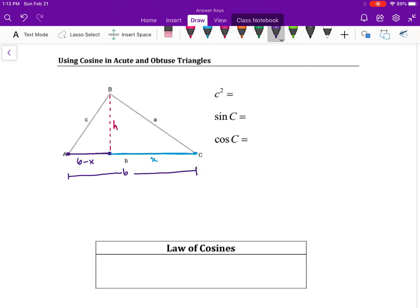We're going to start off and use the Pythagorean theorem to represent side length C, which is the hypotenuse of that left-sided triangle. I'm labeling it as triangle 1. And we know that C squared is going to be equal to H squared plus B minus X squared.